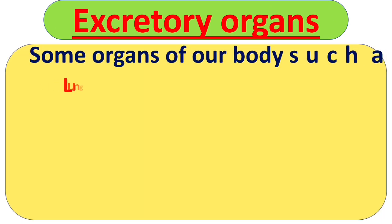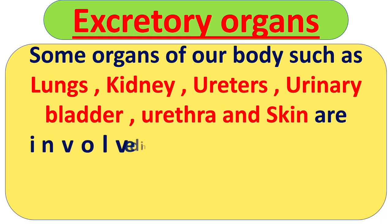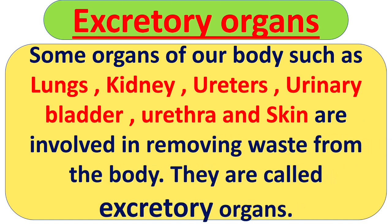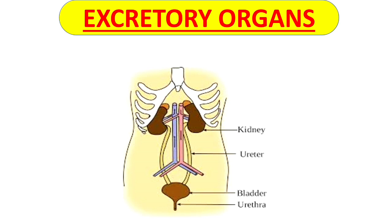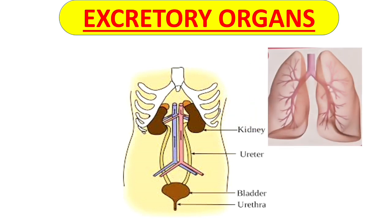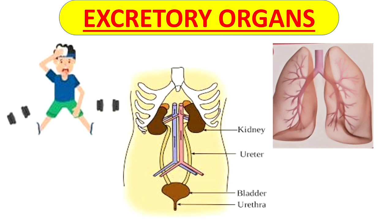Next are excretory organs. Some organs of our body such as lungs, kidney, ureters, urinary bladder, urethra, and skin are involved in removing waste from the body. They are called excretory organs. As you can see in the first picture, you will see kidney, ureter, urinary bladder, and urethra — all these organs are excretory organs. Our lungs and skin are also excretory organs.